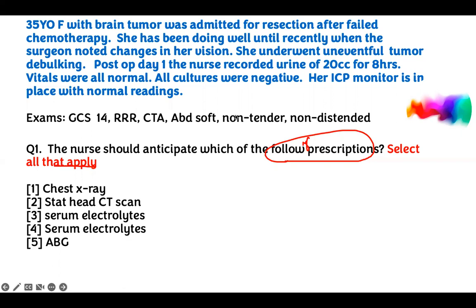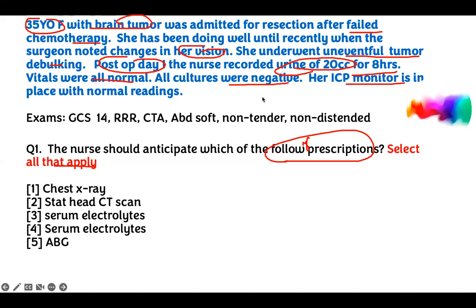They will present the question to you all the time, but don't read it again after you spend that one minute analyzing it. So we know: 35-year-old, circle that — she has a brain tumor, was admitted for resection after she failed chemotherapy. She had been doing well until the surgeon noted a change in vision. She had an uneventful tumor debulking — so she had surgery. Post-op day one, the nurse recorded urine output of 20cc over eight hours. Vitals were all normal, cultures were negative, ICP is working well, GCS is 14.